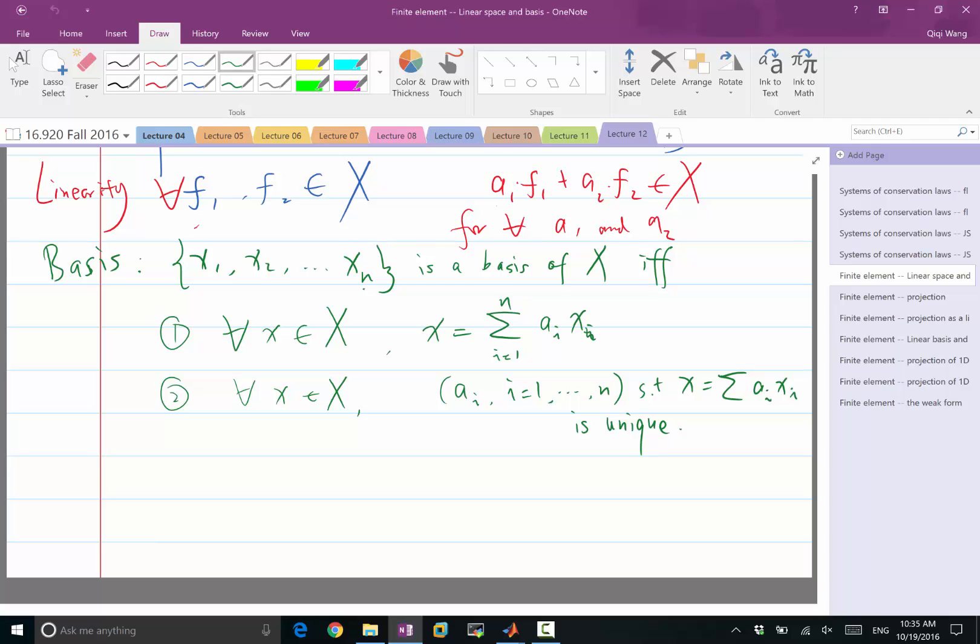A least squares problem in a bunch of numbers. So, for example, if I want to say I want to minimize the distance, we're going to define what the distance should be a little bit later. Between the distance between any function f and x for all x in the linear space x. So if we want to solve that minimization problem,